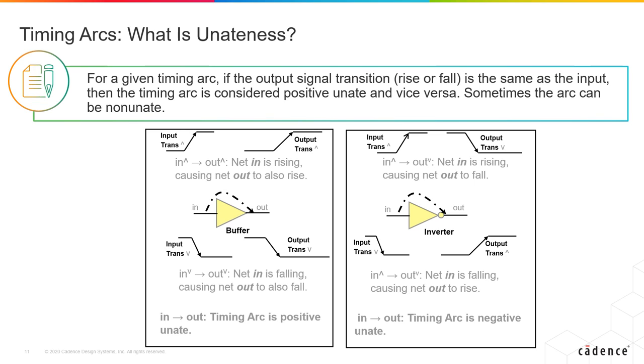If you look at the example of a buffer, the output is rising when the input is rising, the output is falling when the input is falling. So, the timing arc is a positive u-nate because the transition of the output is the same as the transition on the input.